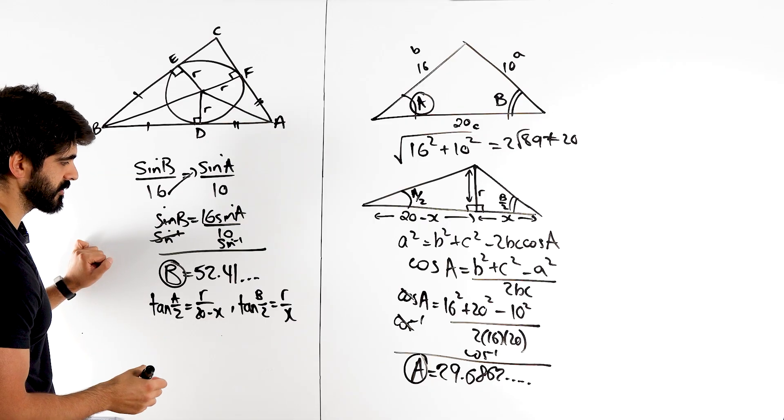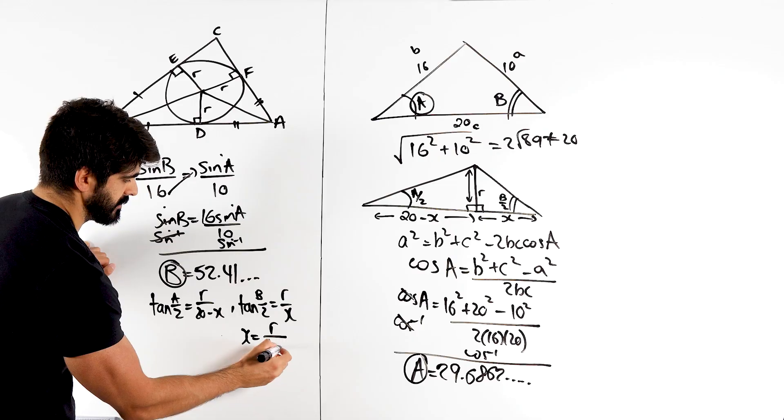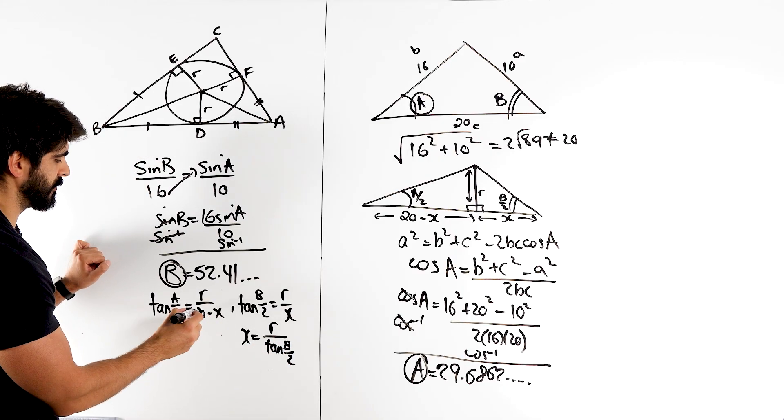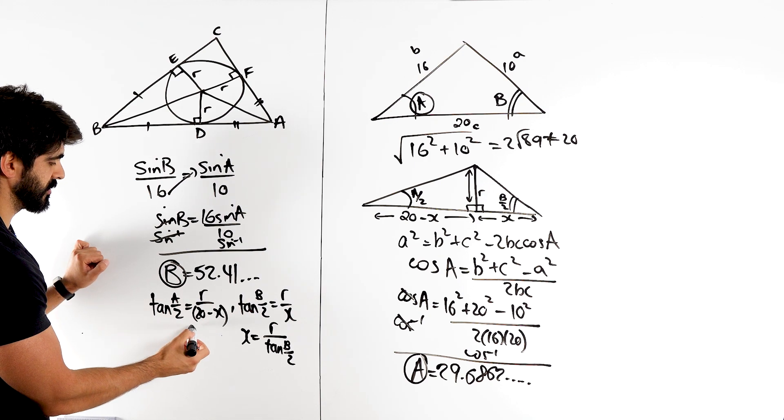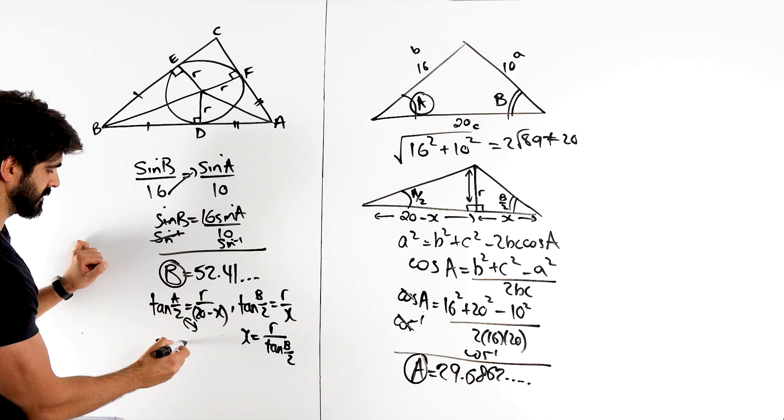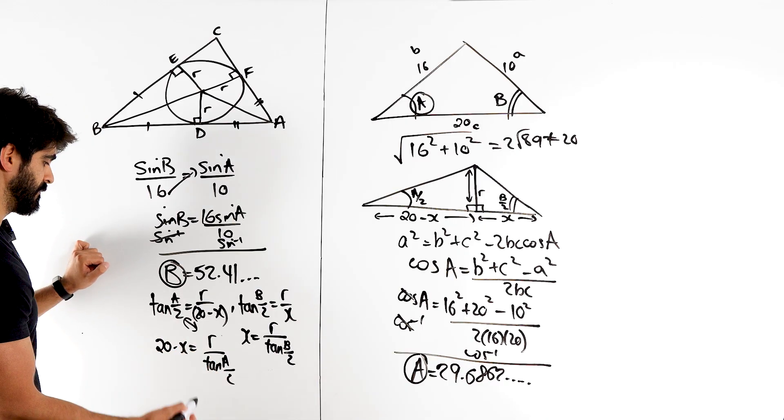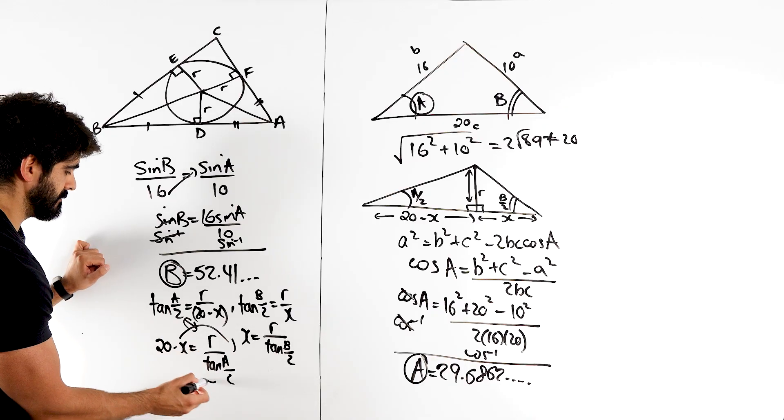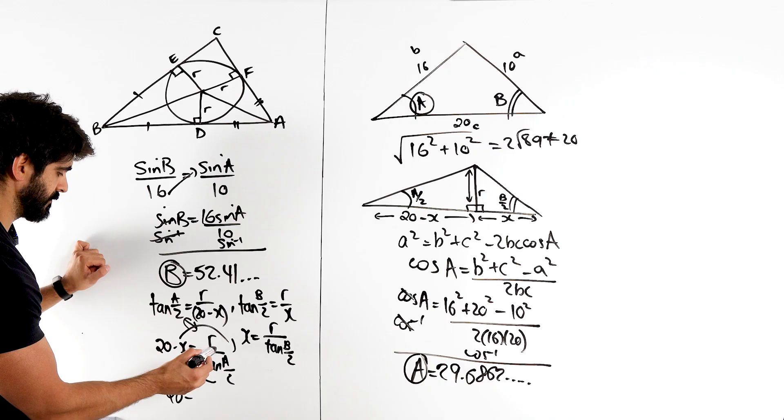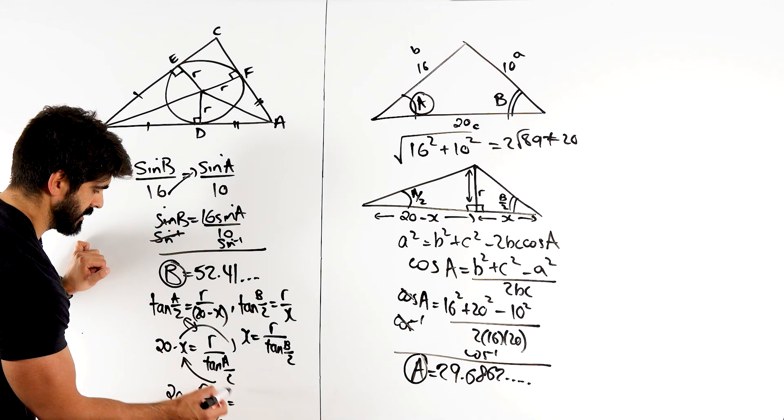So from there, we just need to eliminate x. So here x is r over tan b over 2. I guess we could put in here, but I think it's easier if we just rearrange for x first. So here we can do a cheeky swapsie, just like we did here. So I get 20 minus x is r divided by tan a over 2. Then I'm going to add the x and minus this. So I get 20, 20, subtract r over tan a over 2 is x.